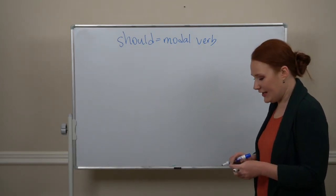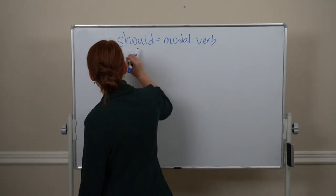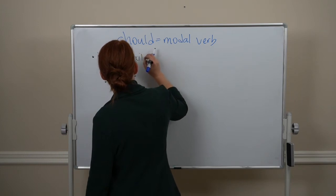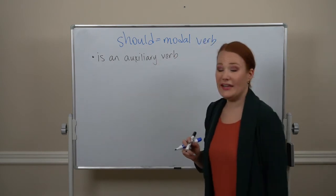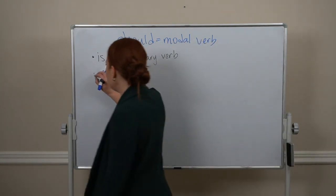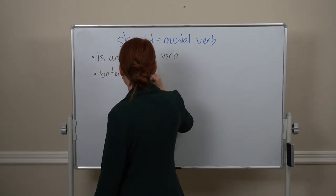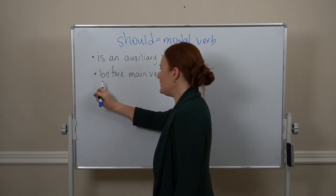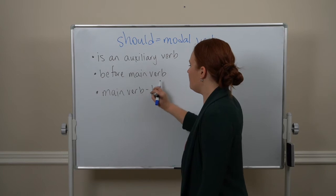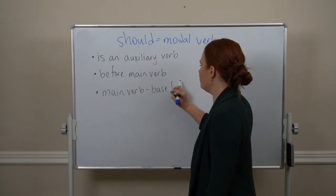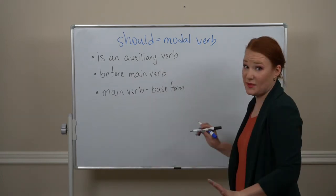So a modal verb is an auxiliary verb. Okay, so that means it comes before the main verb, and it means the main verb is in the base form. No twos, no ings, no s endings, just the base form.